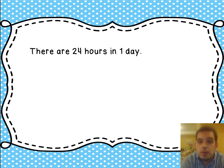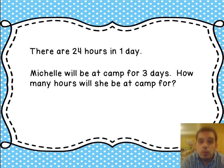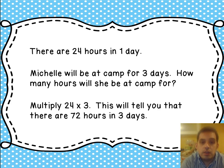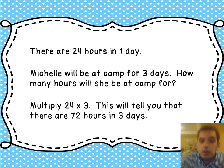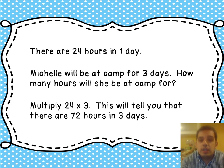There are 24 hours in 1 day. Michelle will be at camp for 3 days. How many hours will she be at camp for? We're going to take 24 — the number of hours in 1 day — and multiply it by 3, because the question tells us she'll be there for 3 days. 24 times 3, or using repeated addition 24 plus 24 plus 24, tells you there are 72 hours in 3 days. So Michelle will be at camp for 72 hours.